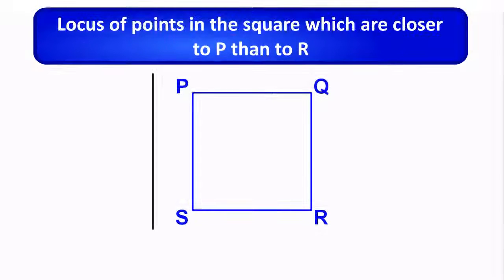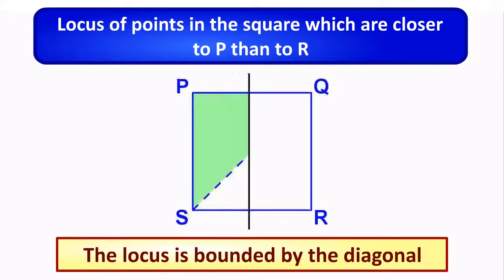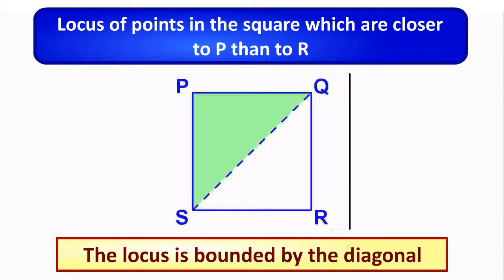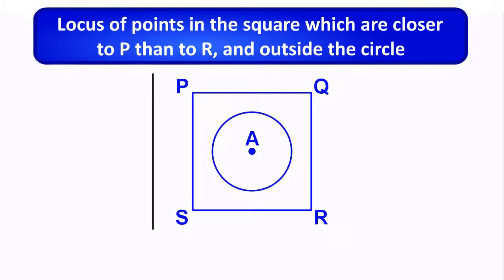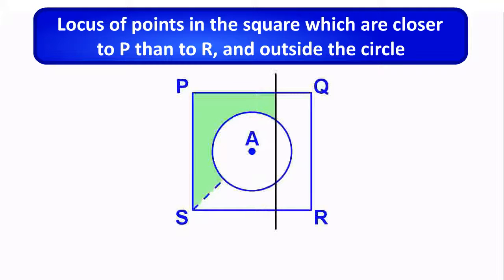The locus of points in a square which are closer to P than to R is bounded by the diagonal. A combined locus of points closer to P than to R and outside the circle defines a more complex region.